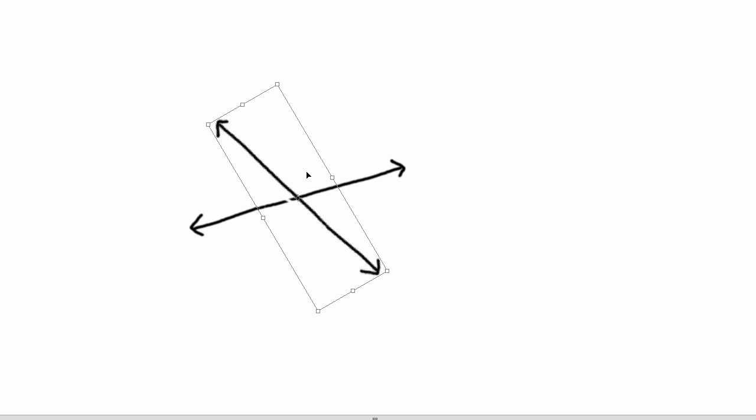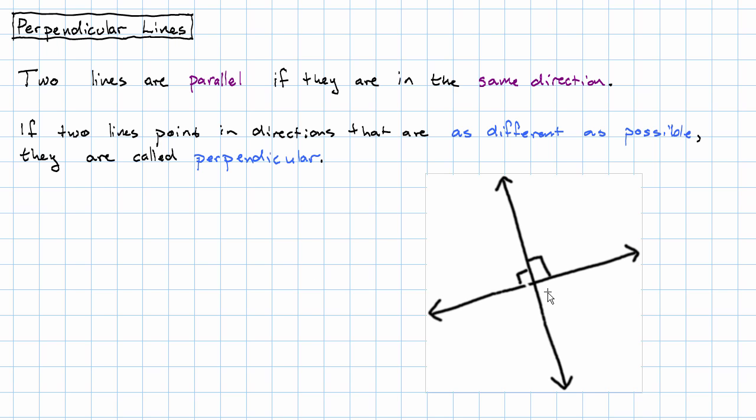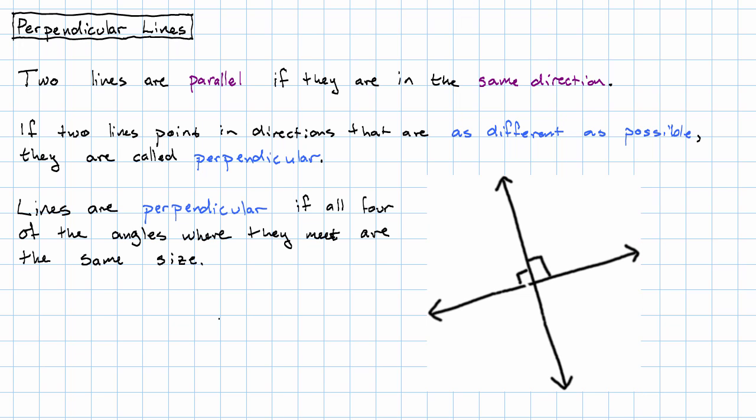While this angle is getting bigger, to have each angle be as big as it possibly can, we need to be in this position where these two angles are the same as each other. So that's what it means for lines to be perpendicular. Lines are perpendicular if all four of the angles where they meet are the same size.